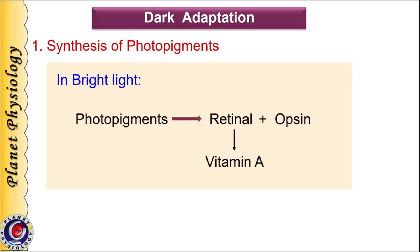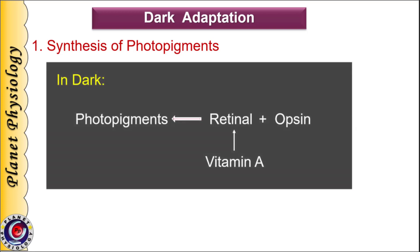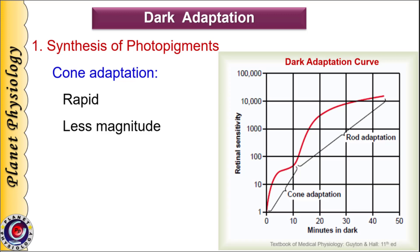Now as the person is exposed to darkness, he cannot see anything because sensitivity of his retina is very low. But immediately, synthesis of photopigments begins in both rods as well as cones, and a person's retinal sensitivity increases. Cones are very quick in regeneration of photopigments, but the degree of their adaptation is very less. This is shown in the dark adaptation curve.